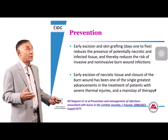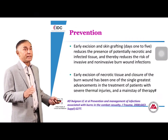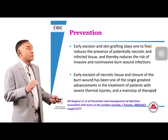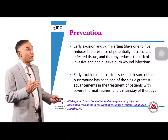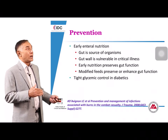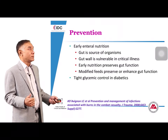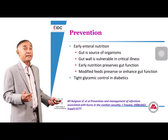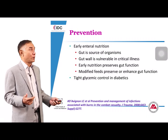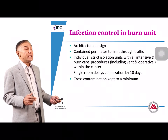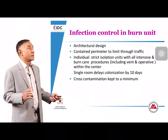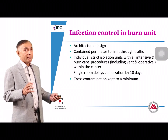Prevention is centered on early excision and skin grafting — that is the number one priority. Additional preventive measures include early enteral nutrition, since the gut is often a source of bowel translocation, and tight diabetic control.